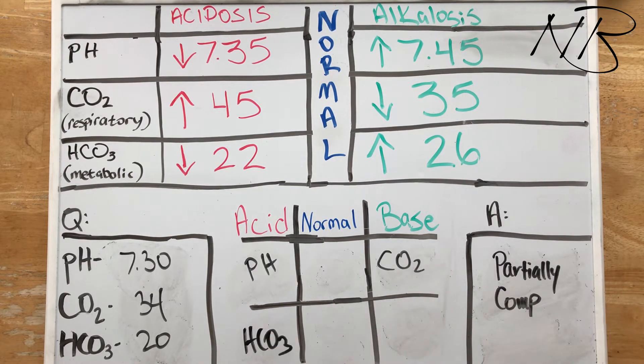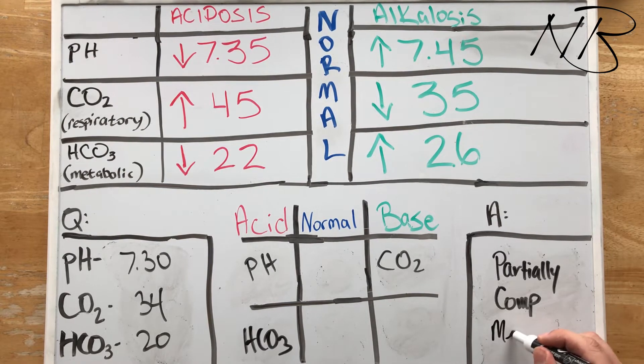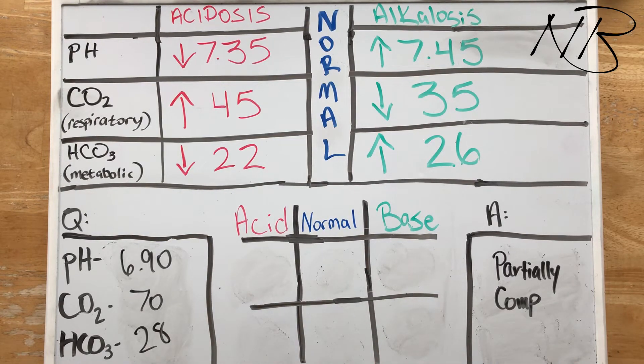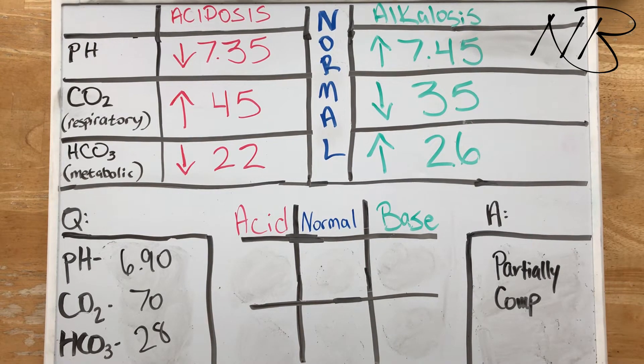So we have partially compensated, because this is on the opposite side, partially compensated metabolic acidosis. Hope this is really starting to make sense guys. One more in this one. But again, do not skip it because we need to segue into the next video.